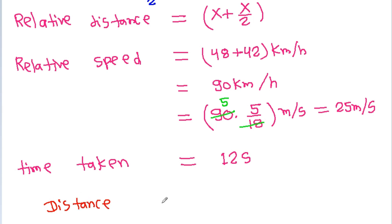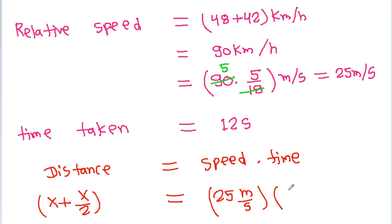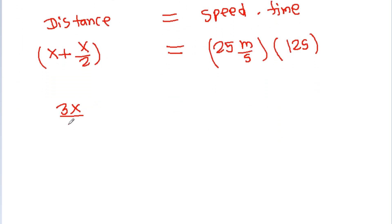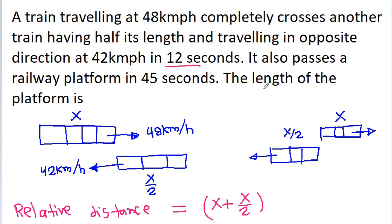The time taken is 20 seconds. We know that distance equals speed into time. So distance x plus x by 2, which is 3x by 2, equals speed 25 meters per second times time 20 seconds, giving 3x by 2 equals 500. Therefore x equals 600 by 3, which is 200 meters.